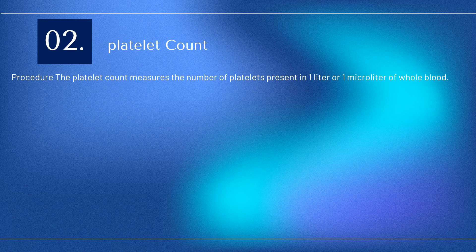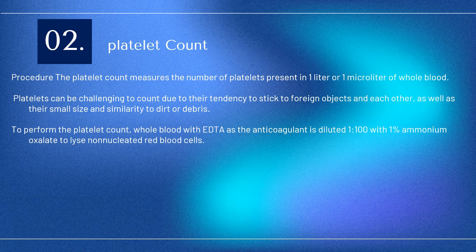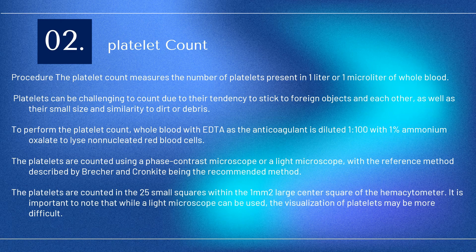Platelet Count: The platelet count measures the number of platelets present in 1 liter or 1 microliter of whole blood. Platelets can be challenging to count due to their tendency to stick to foreign objects and each other, as well as their small size and similarity to dirt or debris. Whole blood with EDTA is diluted 1 to 100 with 1% ammonium oxalate to lyse non-nucleated red blood cells. Platelets are counted using a phase contrast microscope or a light microscope, with the Brecher and Cronkite method being the recommended reference method. Platelets are counted in the 25 small squares within the 1 mm² center square of the hemocytometer.